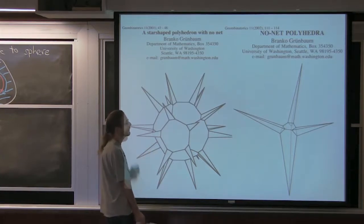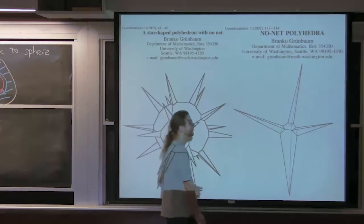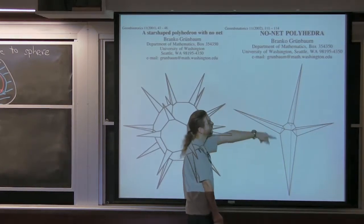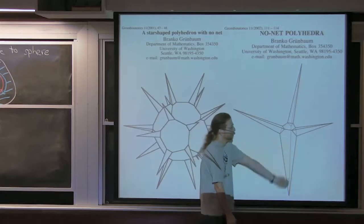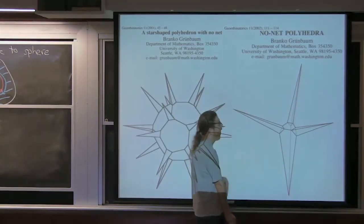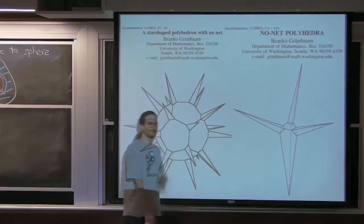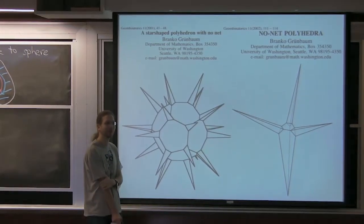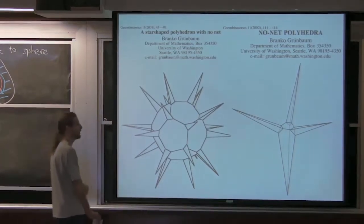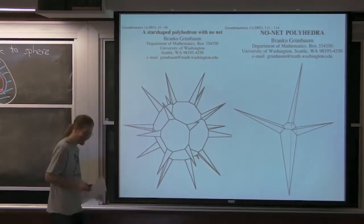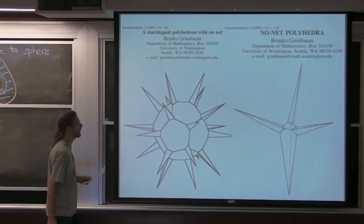When Grünbaum learned about our paper, he wanted to minimize face count. We had 24 faces; his example has only 13 faces. It's minimally structured, also star-shaped. His conjecture is that polyhedra with 12 faces or fewer are always unfoldable — no un-unfoldable polyhedron exists with 12 or fewer faces. So he says polyhedra with 12 faces are 'un-un-unfoldable.' An open problem: define 'un-un-un-unfoldable.'